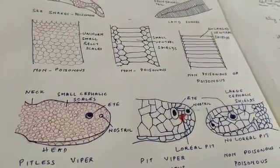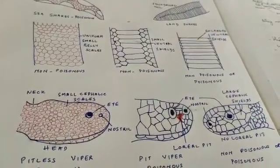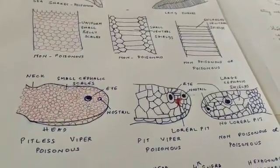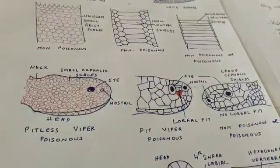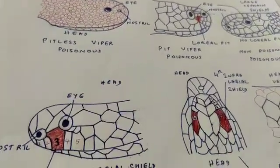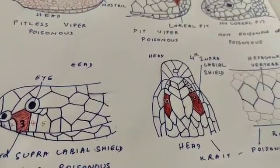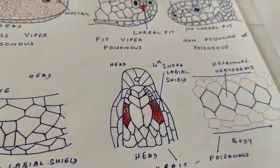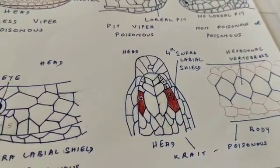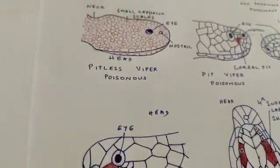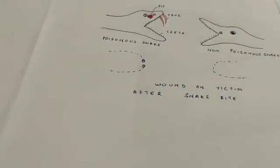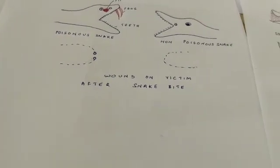To summarize: ventral shields extending from side to side, small scales on the head, the L'oreal pit, the third supralabial and fourth infralabial shields, and hexagonal vertebrals are all indications of a poisonous snake, apart from the presence of fangs.